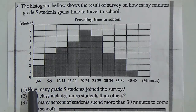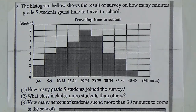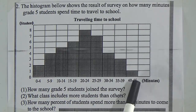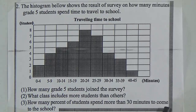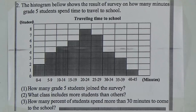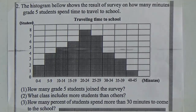Our first question: how many grade 5 students joined the survey? We have to find the total number of students. Question 2: what class includes more students than others? And question 3: how many percent of students spend more than 30 minutes to come to school? We have to find out their percentage. Now I will solve the questions.